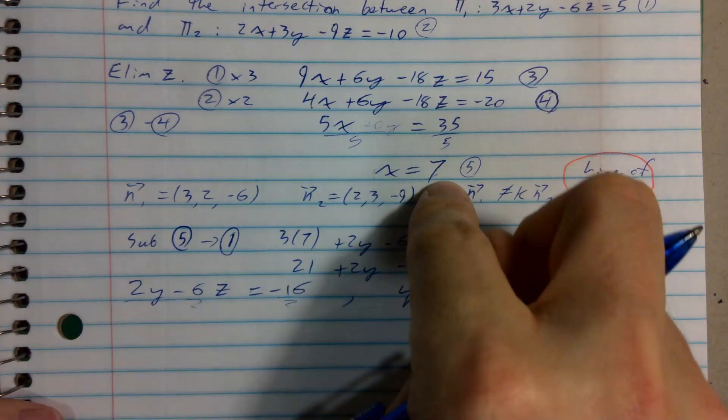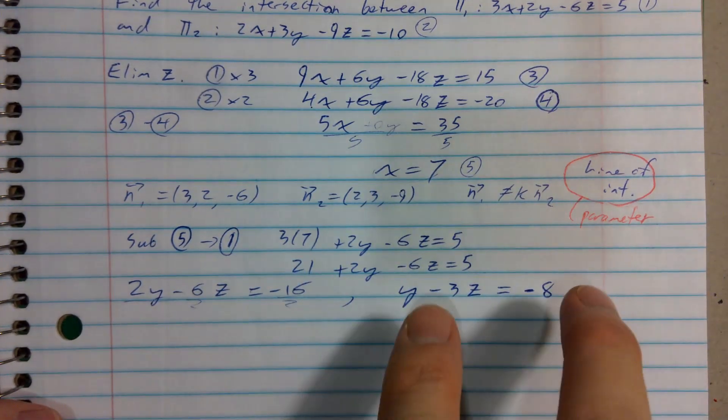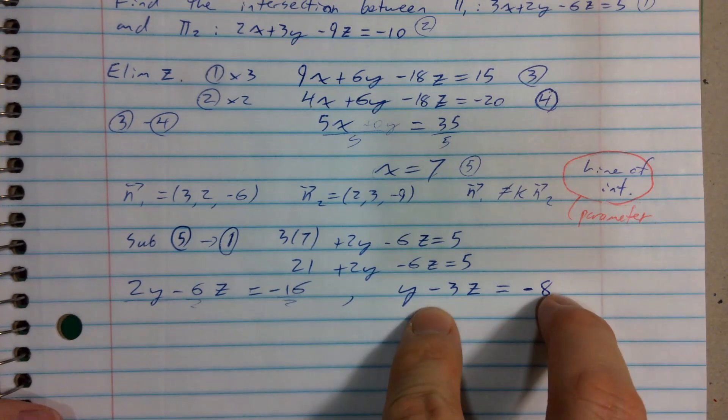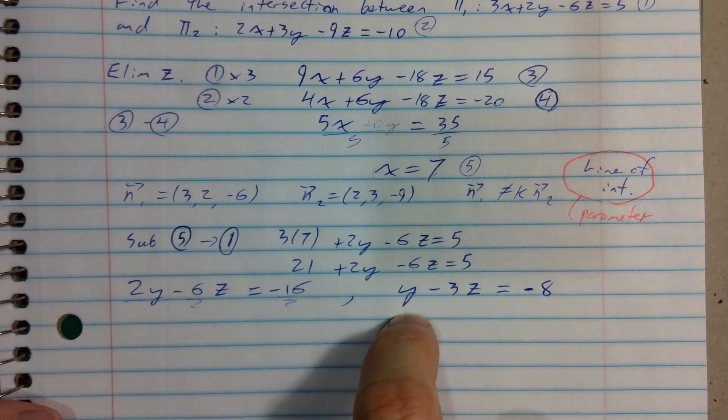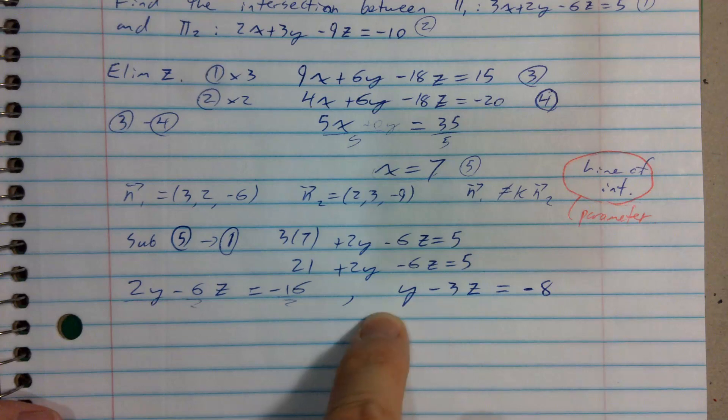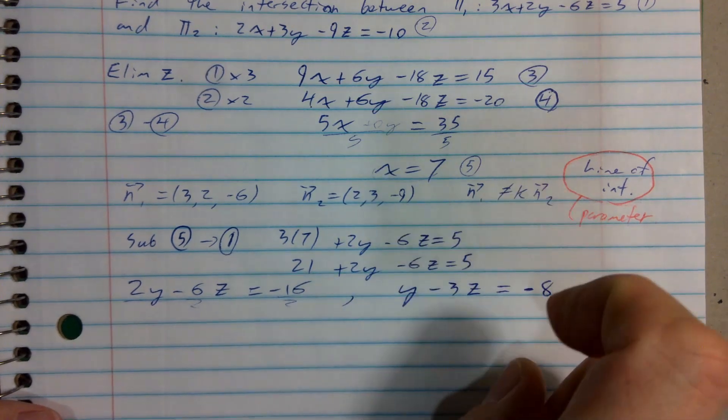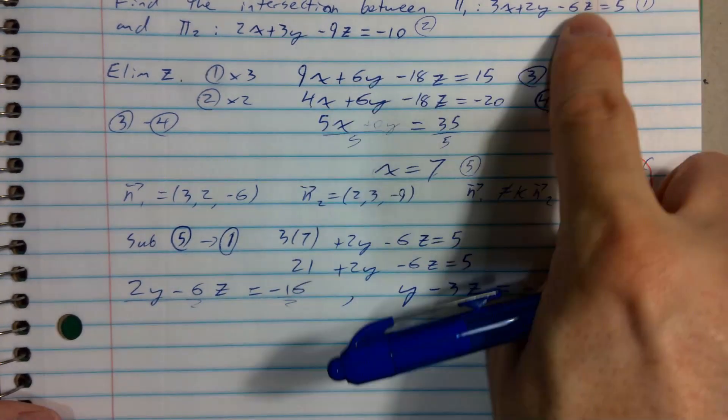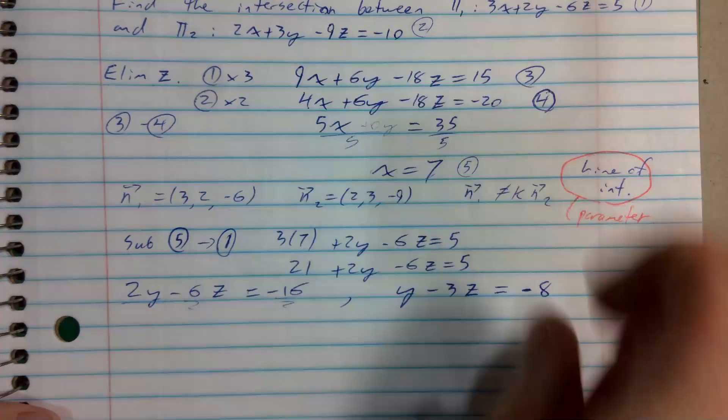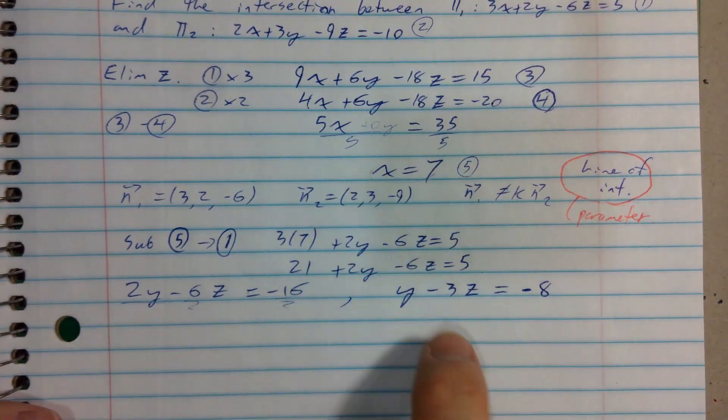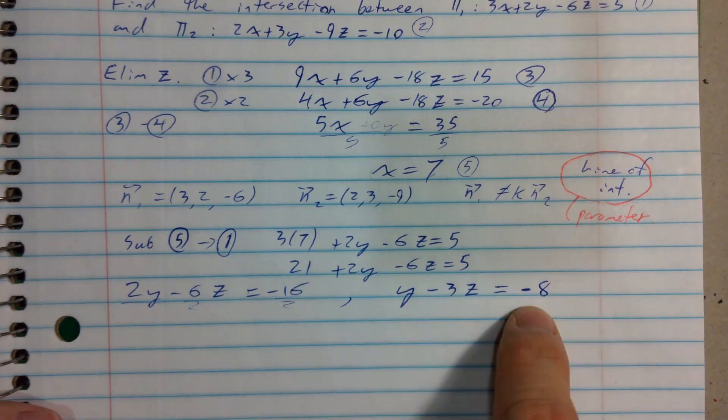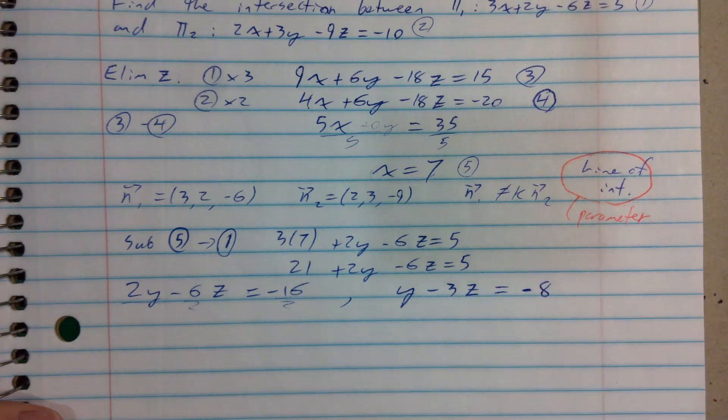So if we just sort of trust the x equals 7 and use it for a bit, we might end up in a situation where we would feel a little bit more comfortable, where we have a relationship that has an infinite number of solutions. For these planes to intersect, for both of these equations to be satisfied, we need x to be 7, and we need y minus 3z to equal negative 8.